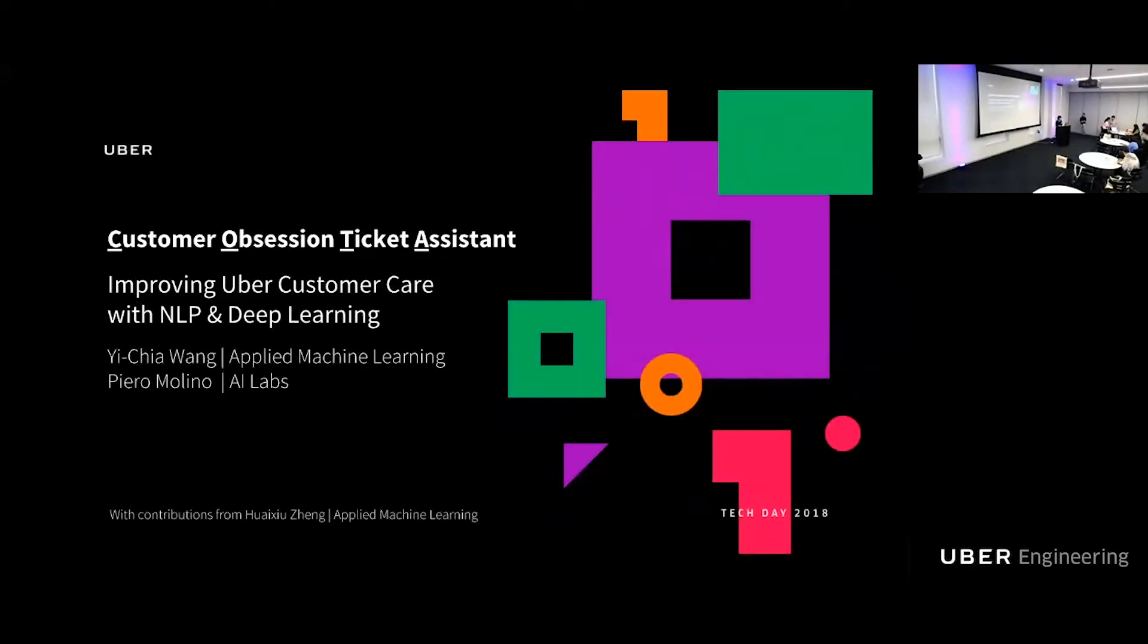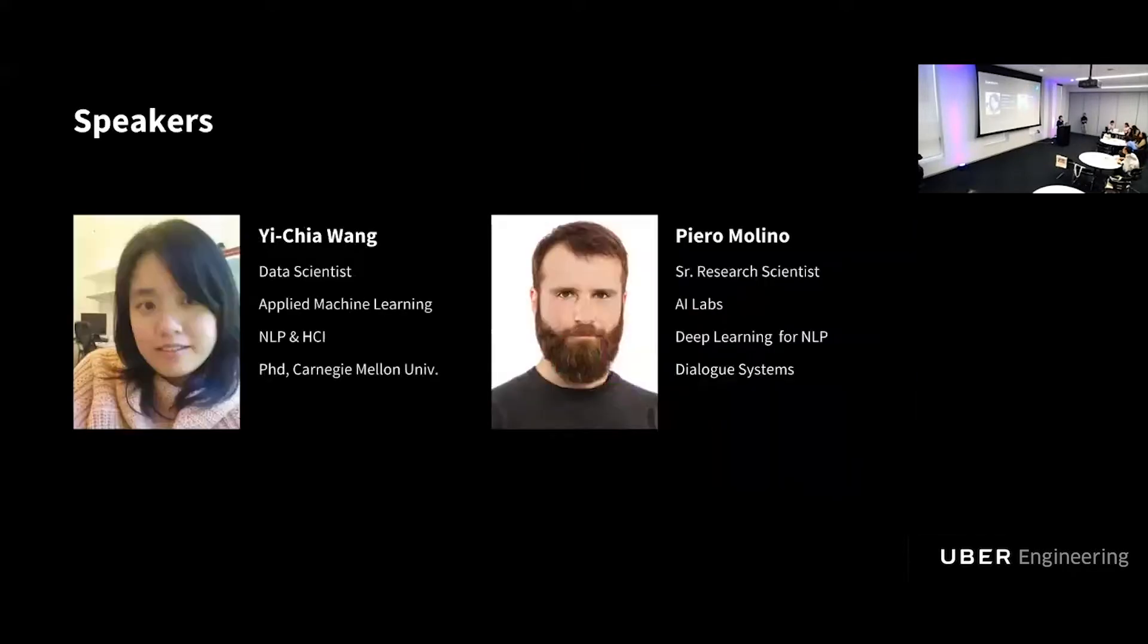Hi everyone, can you hear us? Okay, good. So today, my name is Yijia Wang. Today with Piero Molino, we are going to introduce you COTA, Customer Obsession Ticket Assistant. COTA is a machine learning system we built to improve customer support at Uber. Before I explain more what it is, let me firstly introduce who we are.